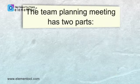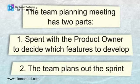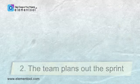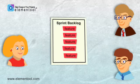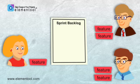The sprint planning meeting has two parts. The first part is spent with the product owner to decide which features to develop. In the second part of the meeting, the team plans out the sprint. The selected tasks are placed in the sprint backlog and assigned to the team members.